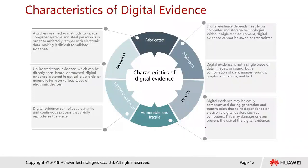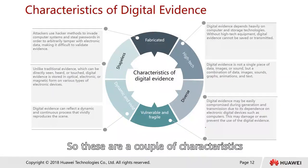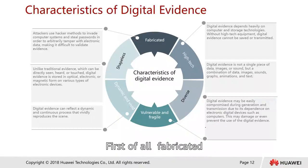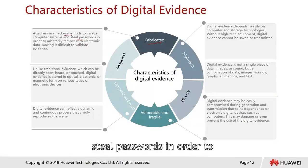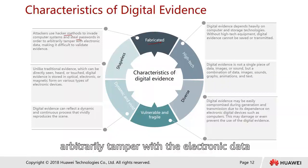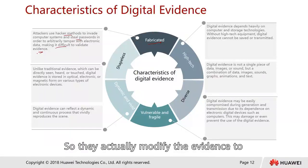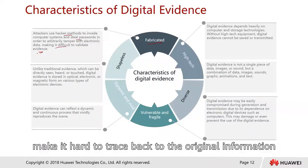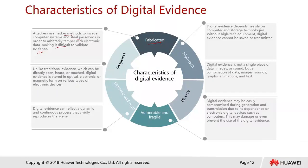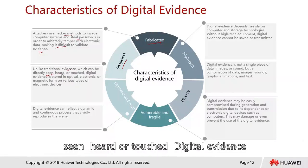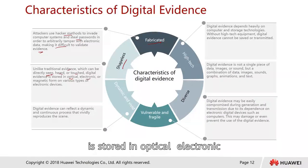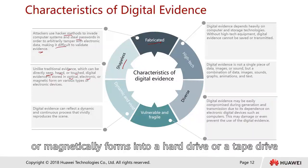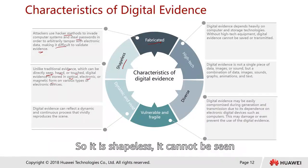Let's look at the typical characteristics of digital evidence. First, fabricated — attackers use hacker methods to invade computer systems and steal passwords in order to arbitrarily tamper with electronic data, making it difficult to validate the evidence. They modify the evidence to make it hard to trace back the original information. Second, shapeless — unlike traditional evidence which can be directly seen, heard, or touched, digital evidence is stored optically, electronically, or magnetically in a hard drive or tape drive.